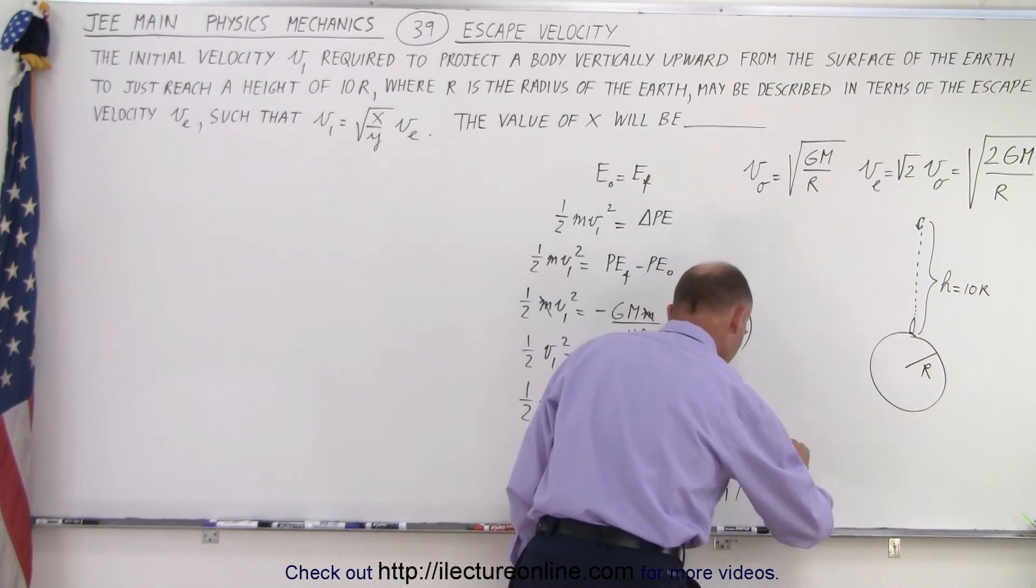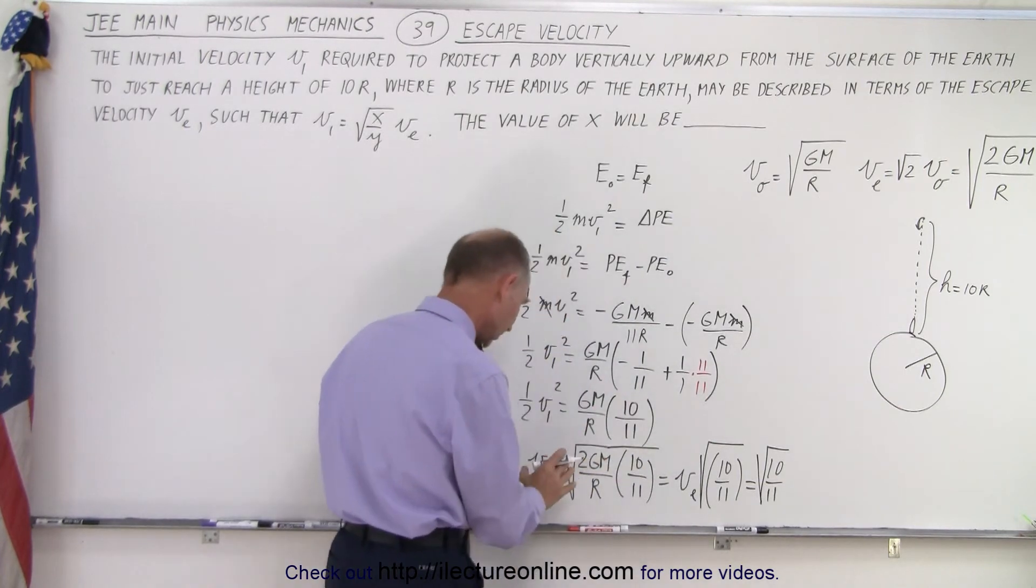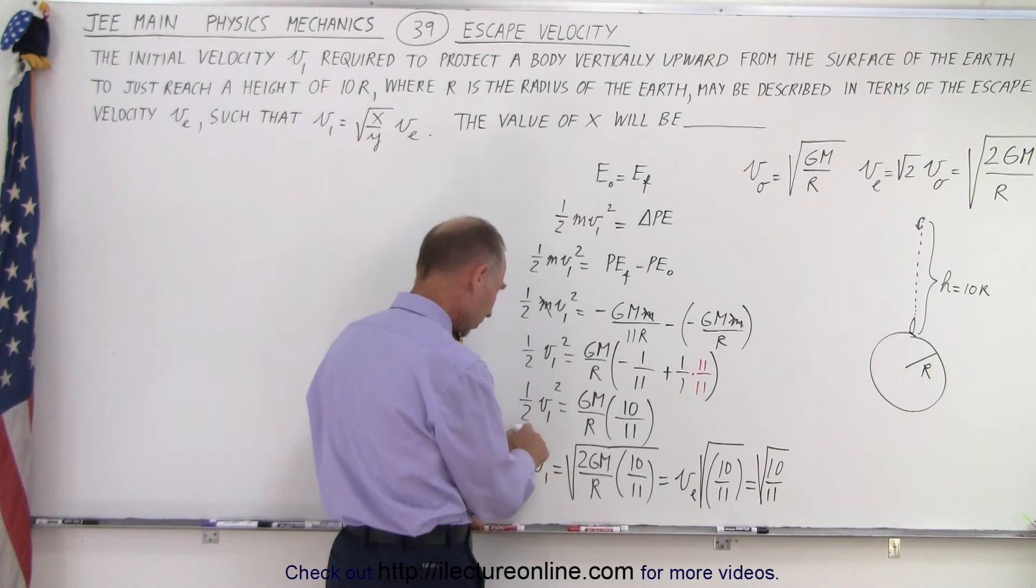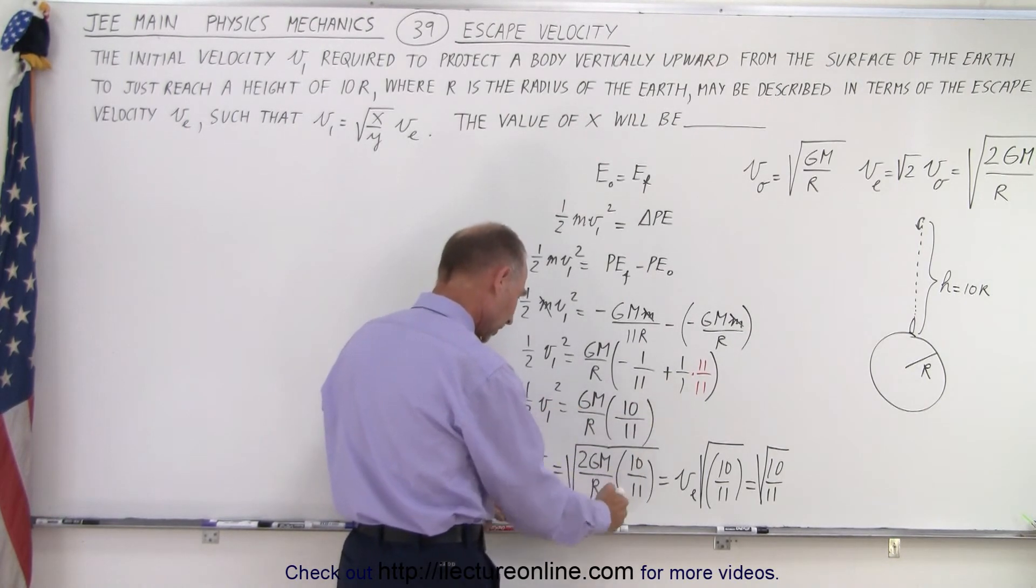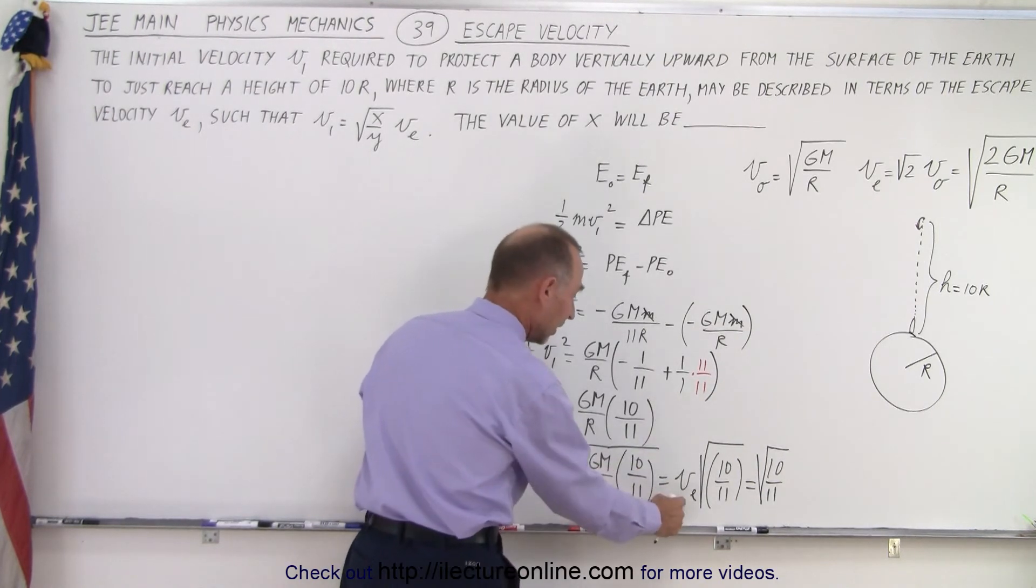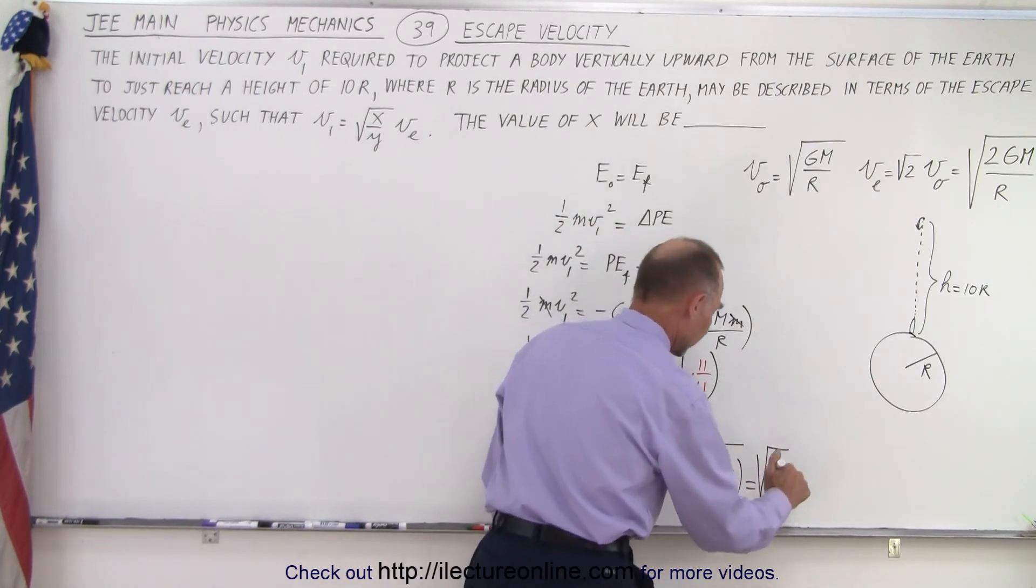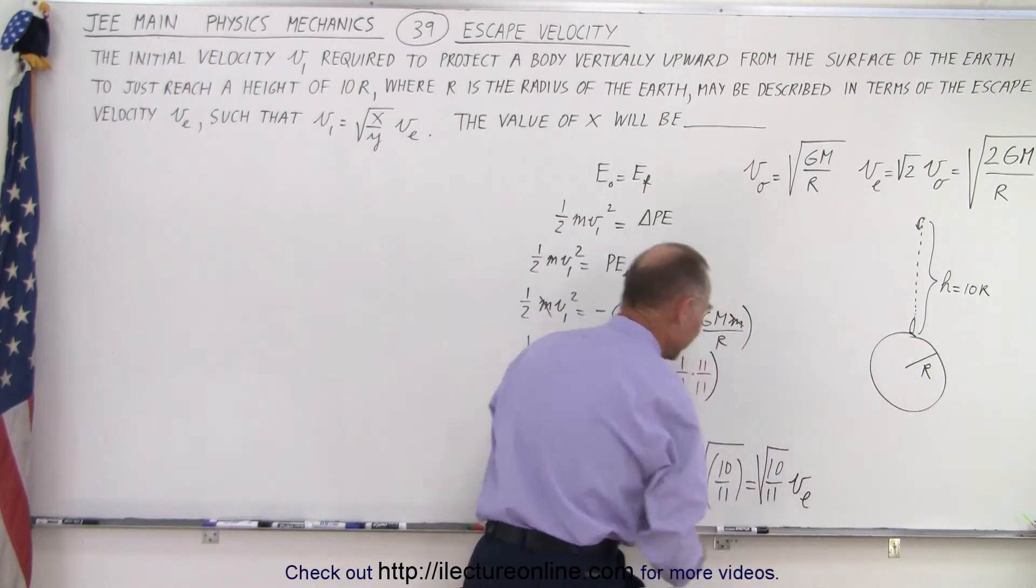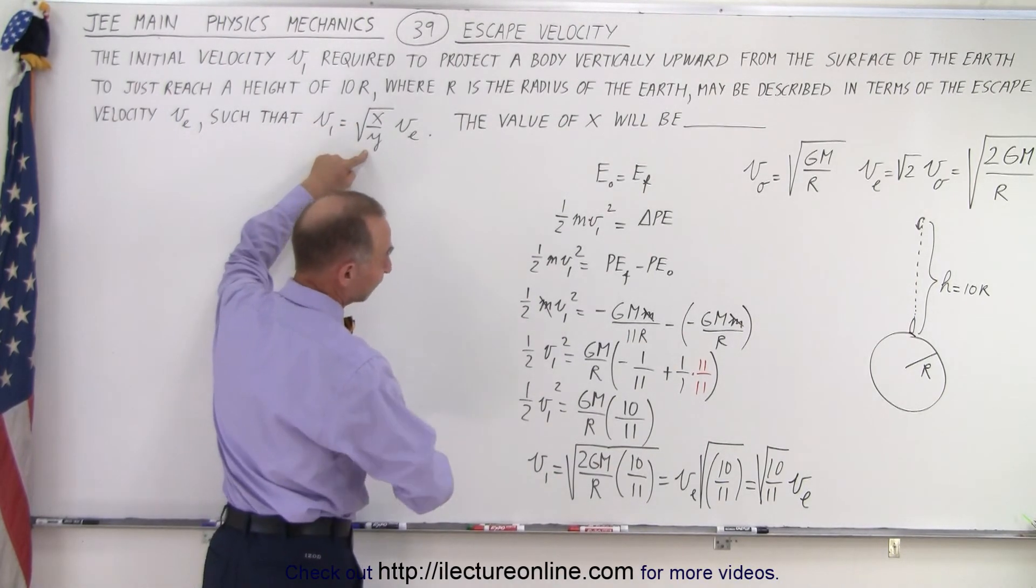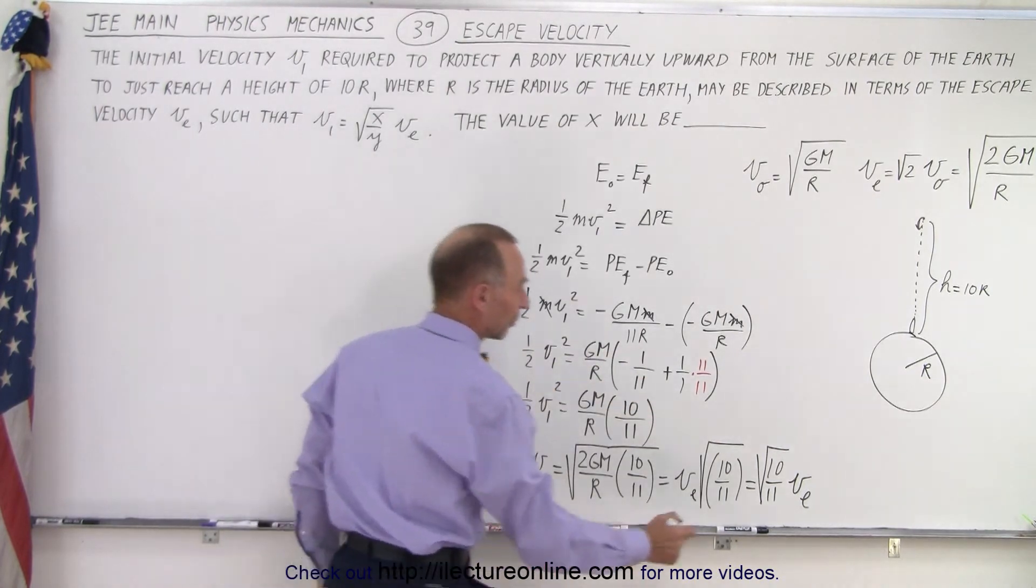So I skipped a step. I put the two over there, then I take the square root of both sides. The square root of this times the square root of that, but the square root of this is escape velocity and I still have the square root of 10 over 11, which is equal to the square root of 10 over 11 times the escape velocity. Now notice I have the square root of x over y. If we assume y to be 11, then of course x equals 10. Therefore we can say that x equals 10, and that must be the solution they're looking for.